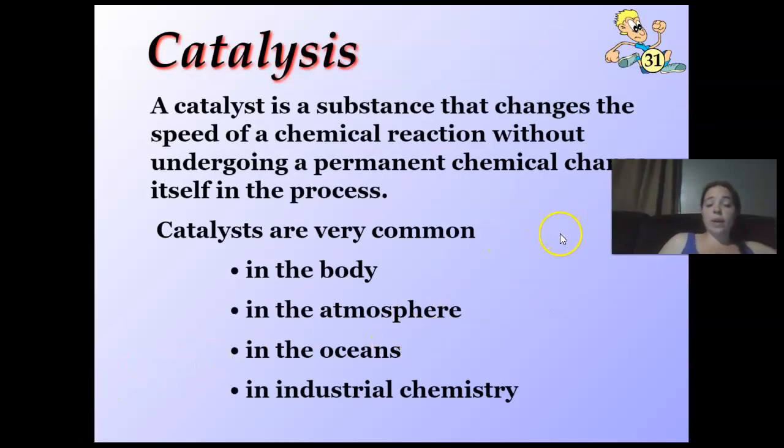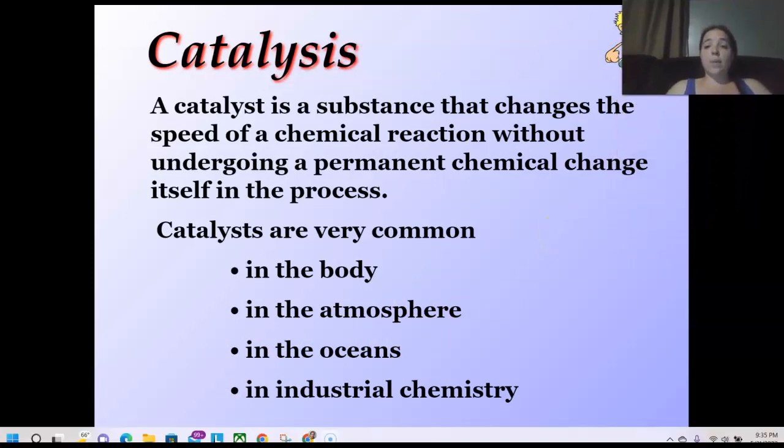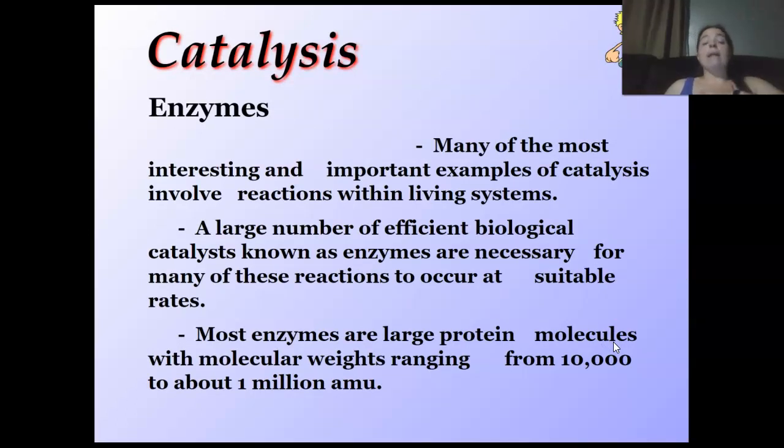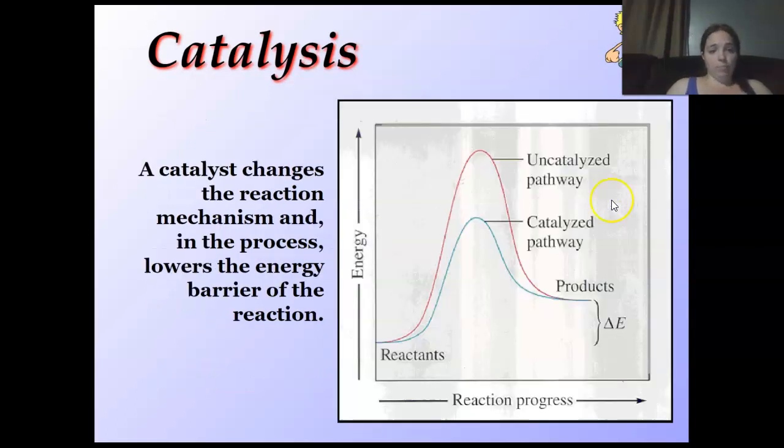Last but not least, we're going to look into catalysts real quick. Catalyst is a substance that changes the speed of the chemical reaction without undergoing permanent chemical change in itself. That means you can pull the catalyst out after you're done using it. Catalysts are very common in the body, in the atmosphere, in the oceans, in industrial chemistry. In our bodies, we have enzymes. Many or most of the most interesting and important examples of catalysts involve reactions with living systems. A large number of efficient biological catalysts, known as enzymes, are necessary for many of these reactions to occur at suitable rates. Most enzymes are large protein molecules with molecular rates ranging from about 10,000 AMU to about 1,000,000 AMU.